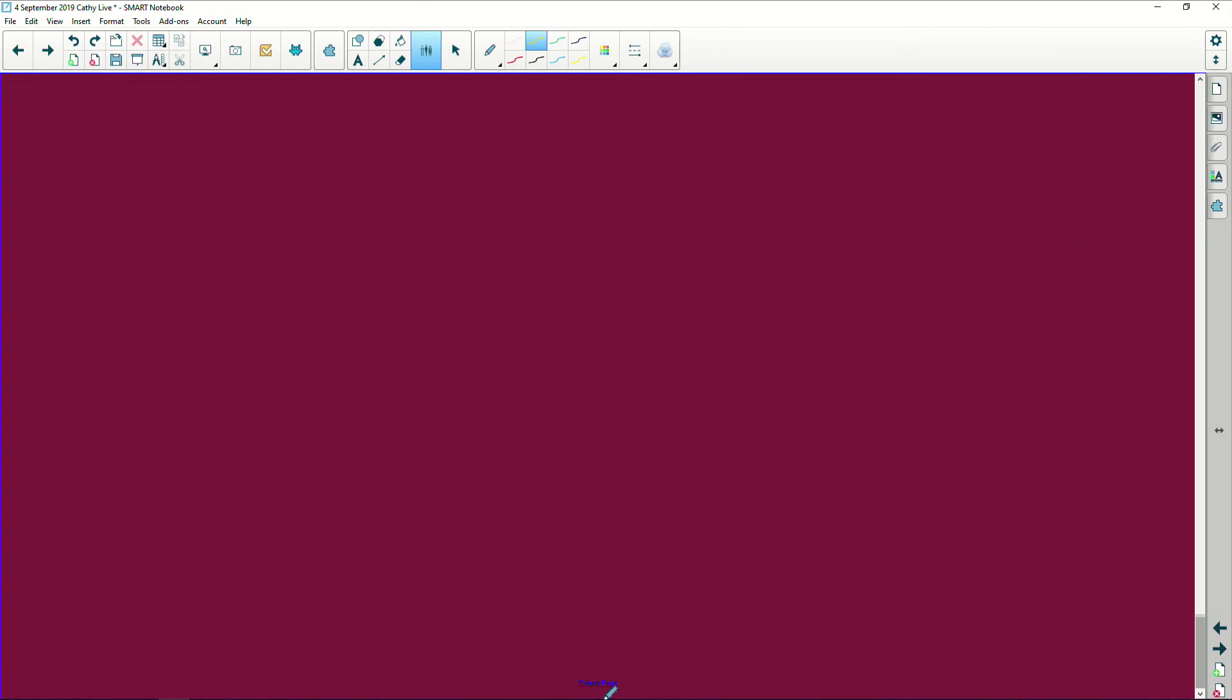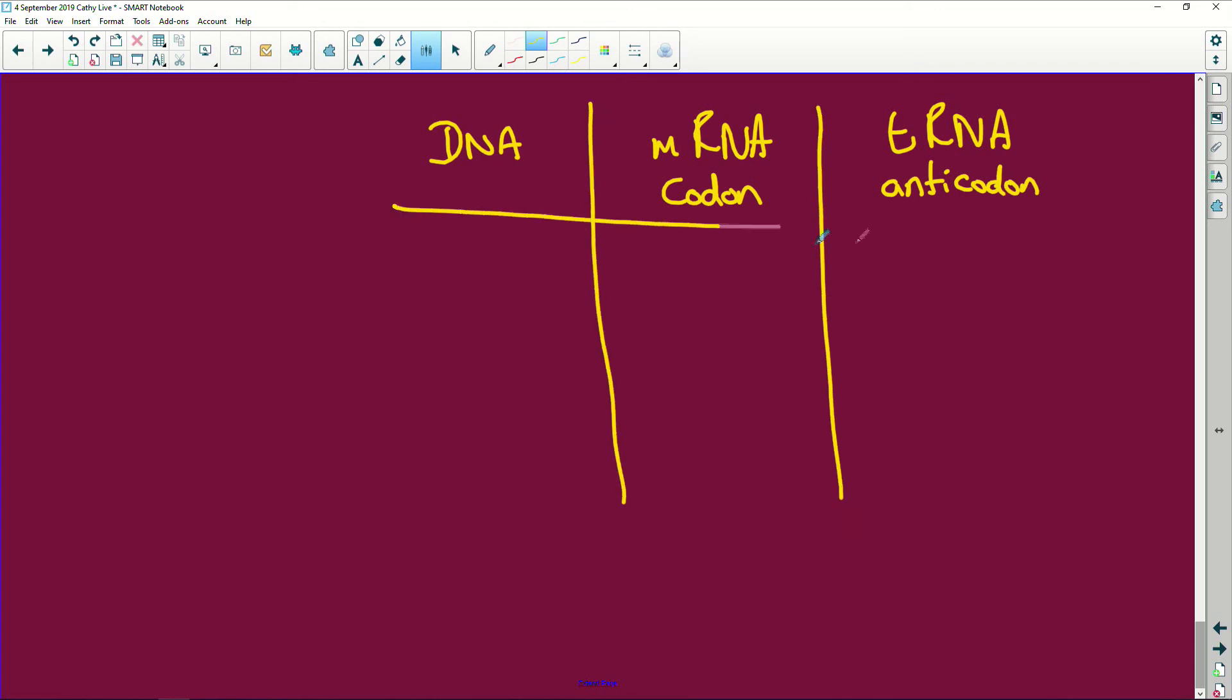I want to show you this. I need you to pay attention. If I have my DNA here and I have my messenger RNA, that's the codon, and you have the transfer RNA. If you understand what I'm going to do now, you will never ever mess this up. This is the anticodon.